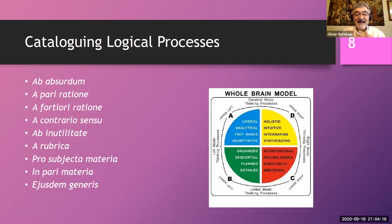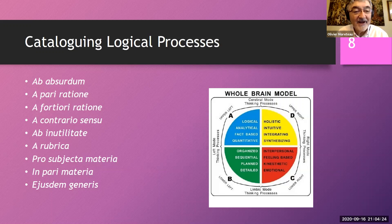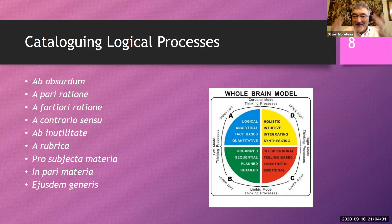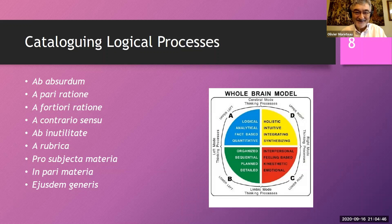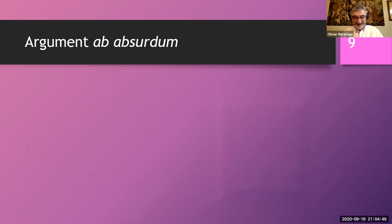Now I have a sort of catalog of logical processes — all these Latin words — and we're going to try to map out the brain of the good exegète. So take a deep breath, and we're going through these arguments one after the other, of course with examples as we move on. Let us start with an argument called ab absurdum.